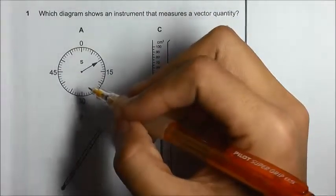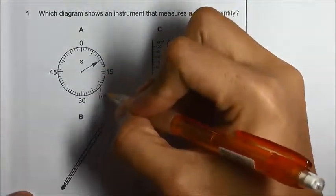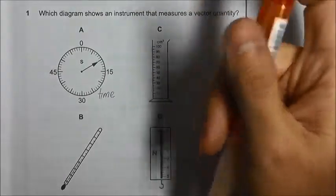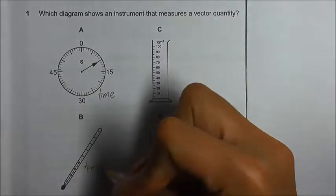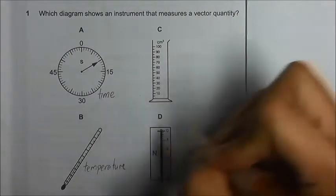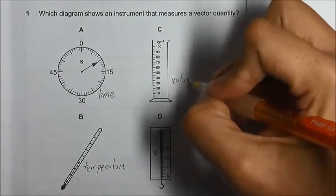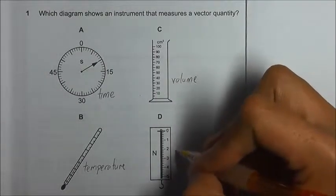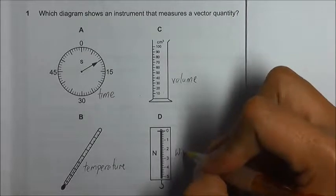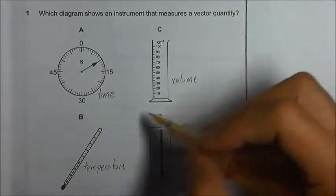Option A here shows a stopwatch that measures time, and option B shows a thermometer that measures temperature. Option C is a measuring cylinder that measures volume, and option D is a newton meter that measures the weight or the force.